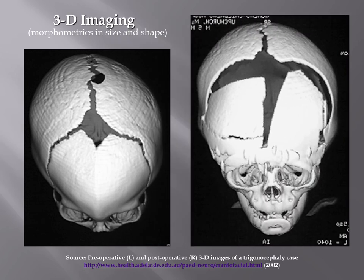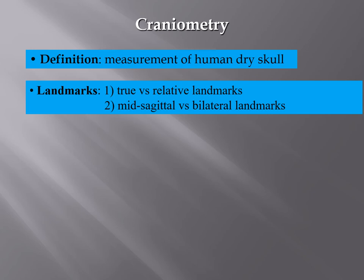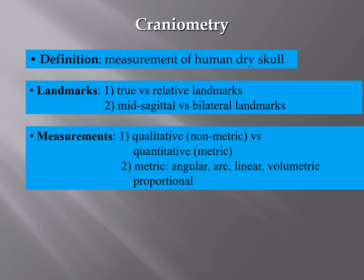This is showing some 3D imaging used in craniometry — one on an individual who received blunt force trauma and another on an individual who received a gunshot wound to the head. Craniometry is the scientific measurement of the human dry skull. It's important to note that bones are soaked in fluid and as they dry out they shrink a little bit. Researchers look at landmarks on the skull — true landmarks versus relative landmarks — mid-sagittal landmarks down the middle, and bilateral landmarks occurring on both sides.